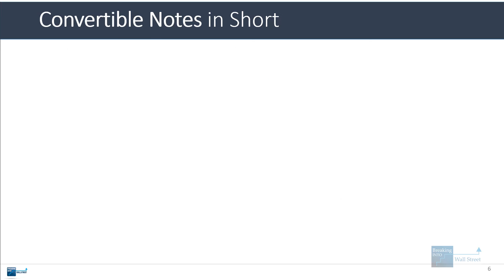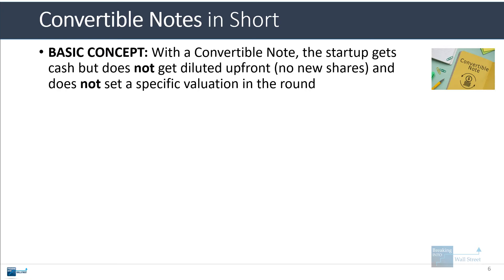I'm going to start with the two or three minute version, and then if you want more detail or more of a walkthrough in Excel, you can keep watching and we'll go through that. So with a convertible note, the startup raises cash from investors. It gets the cash, but it does not get diluted upfront because it does not issue any new shares initially when the convertible note first becomes outstanding.